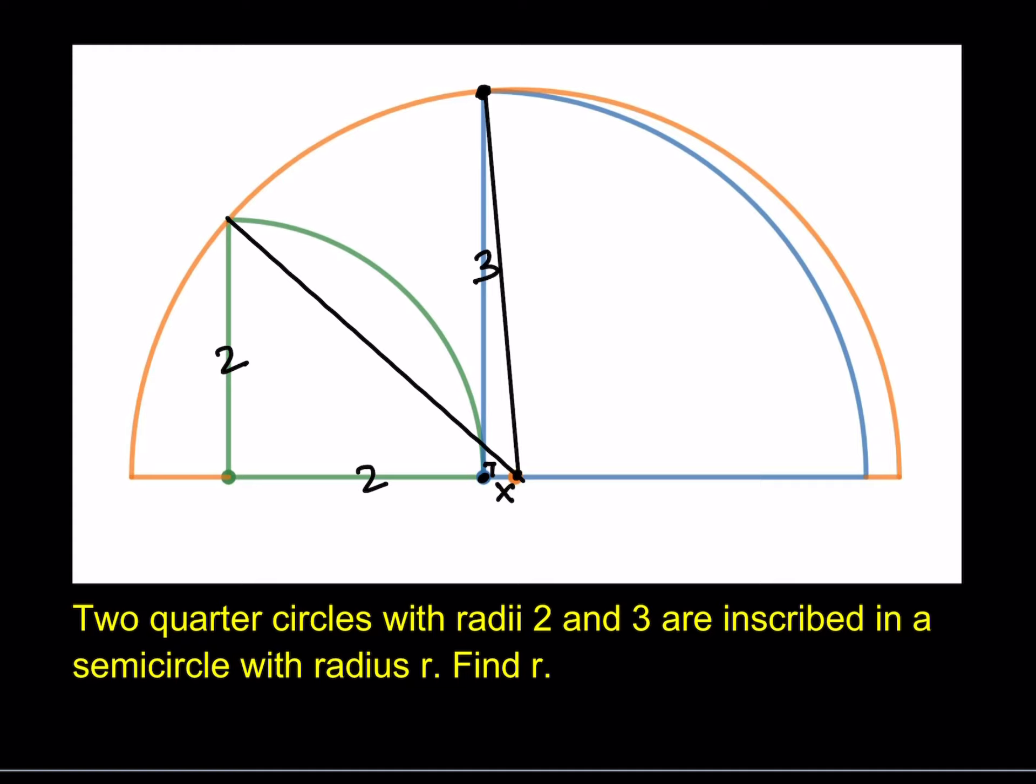And we do know that these are quarter circles, so this should be a 90-degree angle. Therefore, I do have a tiny right triangle here, don't I? And the height of this triangle is 3. What about the base of this triangle? Well, let's call that x. Awesome. And what do we know about this piece here? I don't think we're going to need that length. So, we're good.